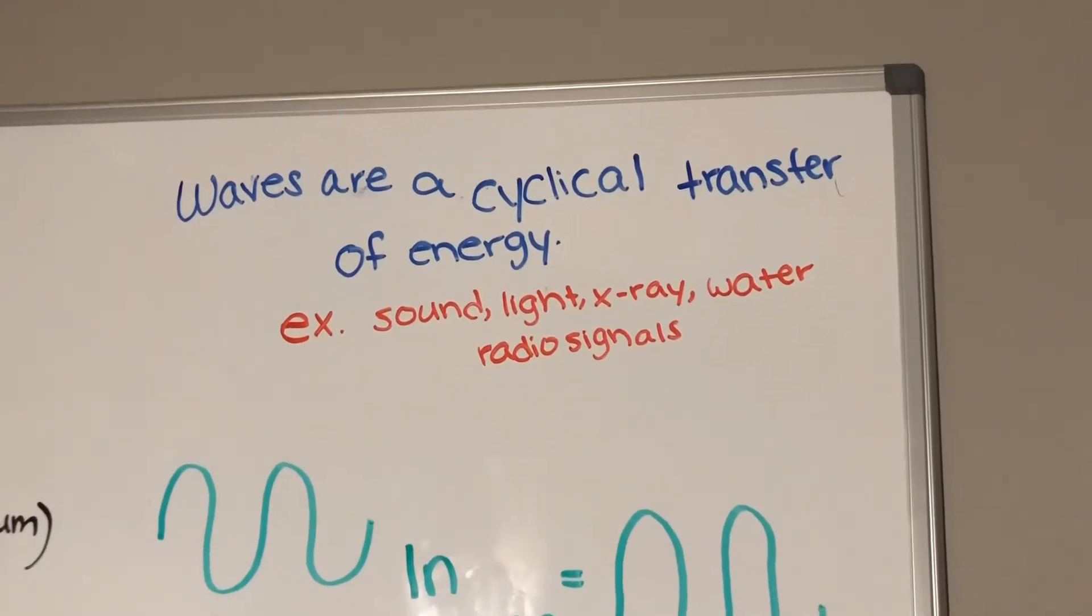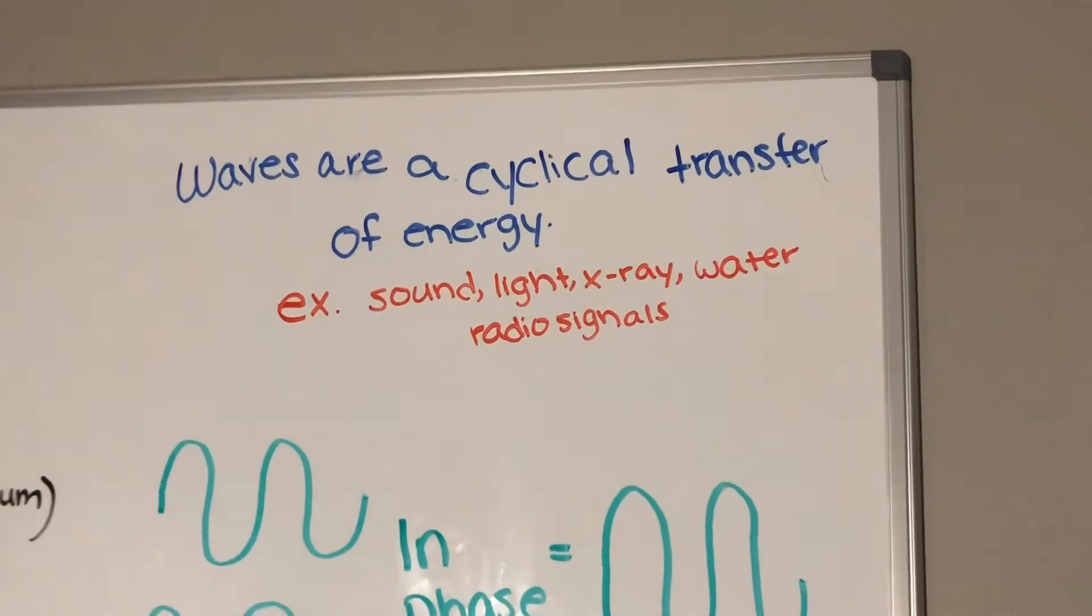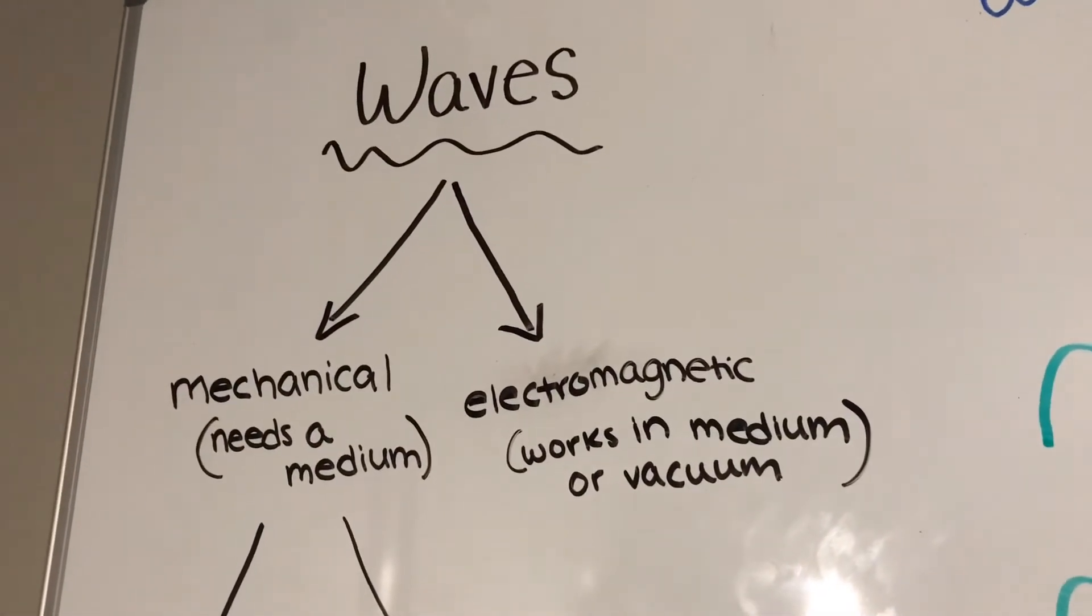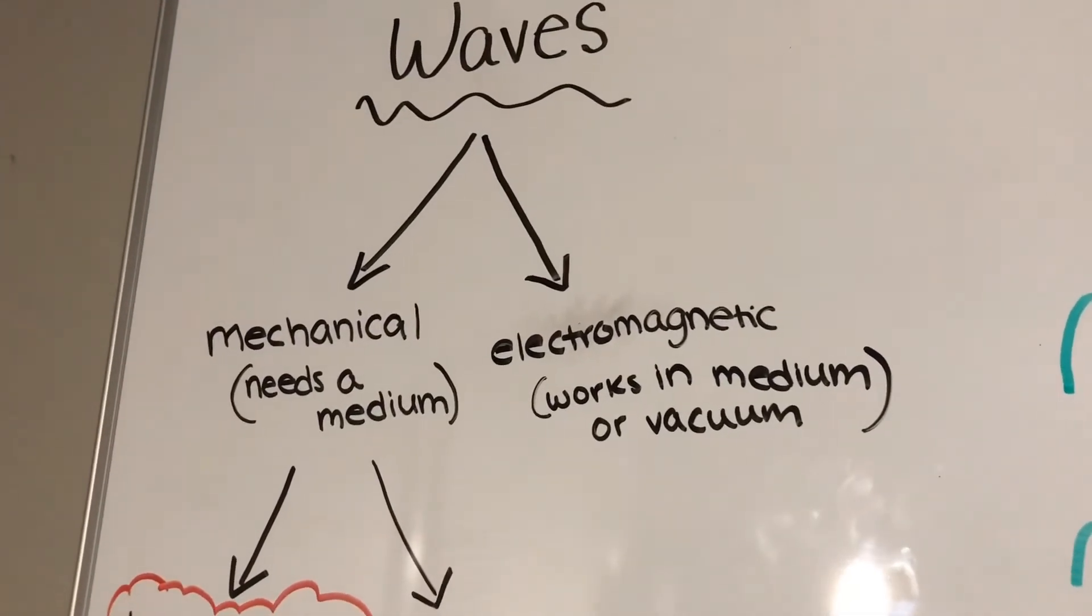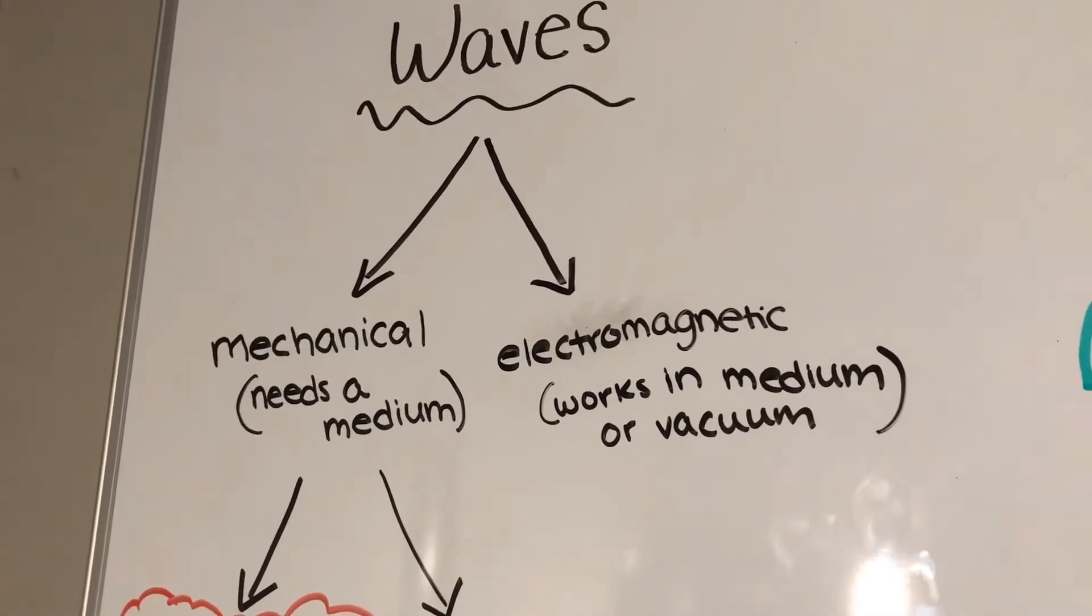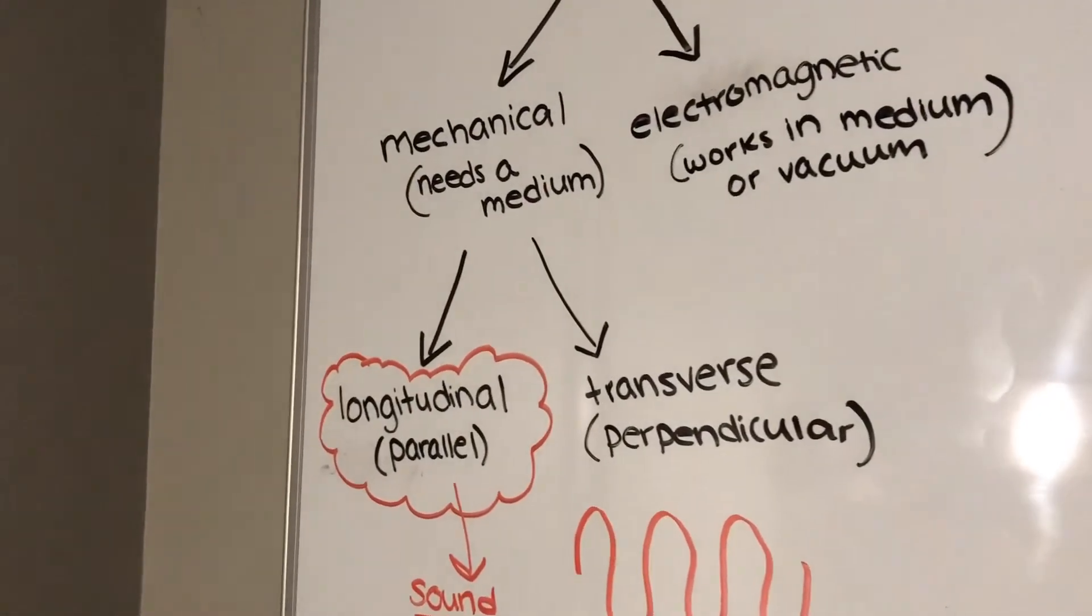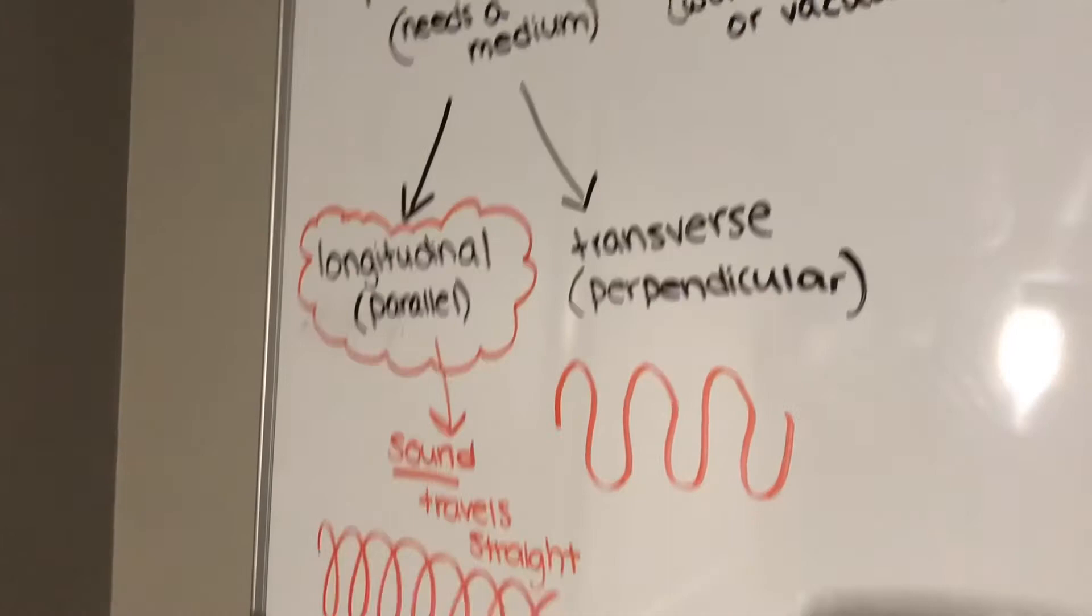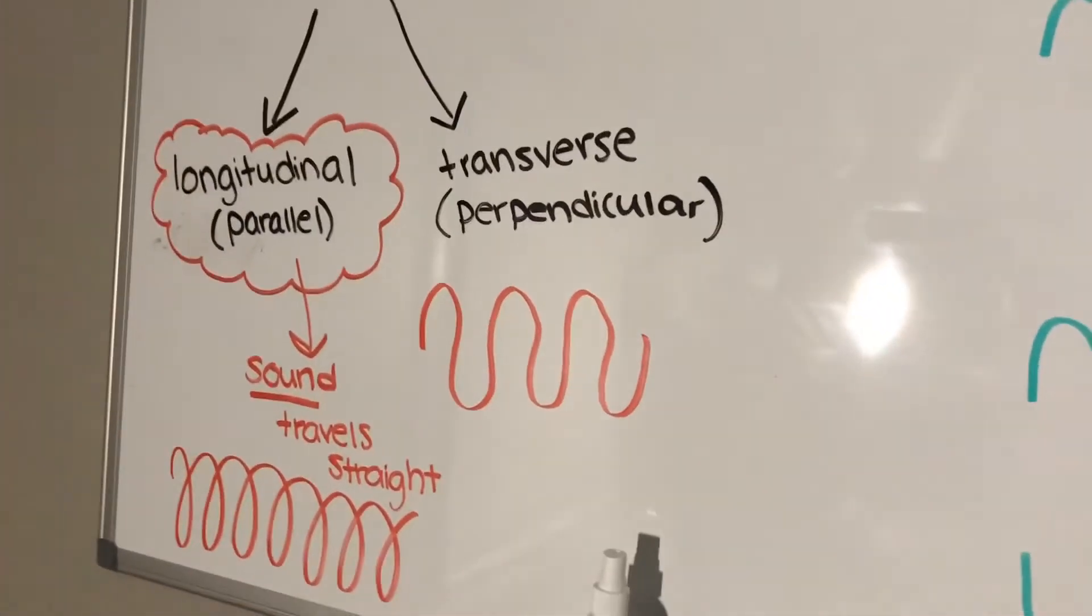Waves are a cyclical transfer of energy, and some examples are sound, light, x-ray, water, and radio signals. Waves can be classified in either mechanical or electromagnetic. If it's mechanical, it needs a medium to travel in, and if it is electromagnetic, it can work in either medium or a vacuum. Mechanical can be further broken down into longitudinal and transverse. So sound actually travels straight, which would be longitudinal, and transverse is perpendicular.